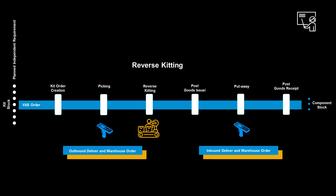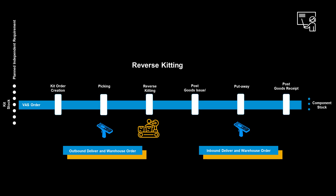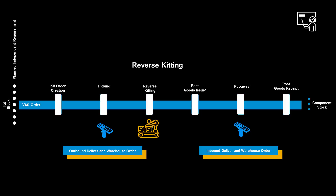The reverse kitting follows the same process steps; however, this time we bring kits to the workstation before dismantling them and storing the single components back into the warehouse.